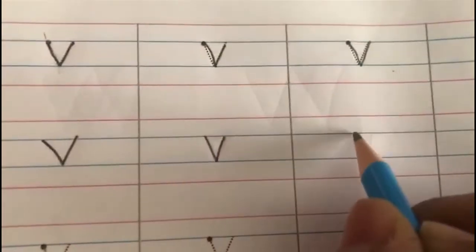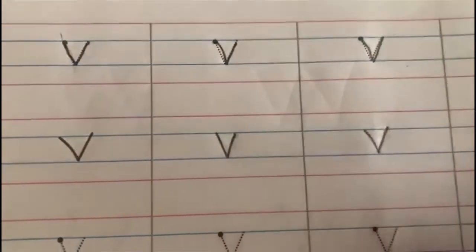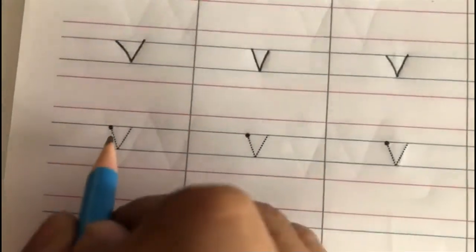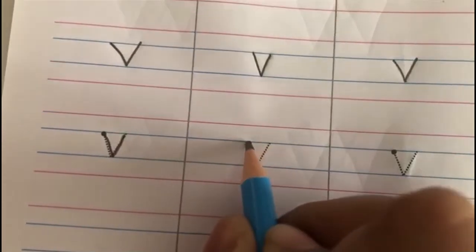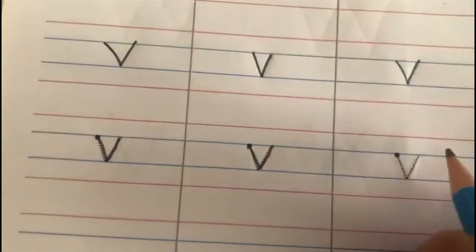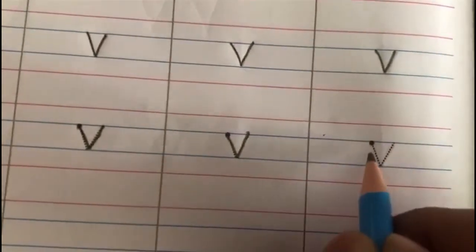V says V. Okay children, like this we are going to complete this entire page. And when we write, we are going to say the sound that V makes. V says V. Okay?